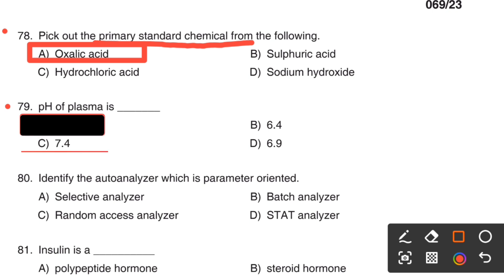Next one. The pH of plasma is? The right answer is Option C, 7.4. The pH of plasma is 7.4.